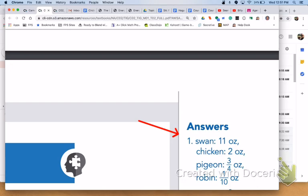For number 1, the bird with the heaviest egg is the swan with 11 ounces, then the chicken with 2 ounces, third is the pigeon with 3 fourths of an ounce, and the lightest egg is the robin with 1 tenth of an ounce.